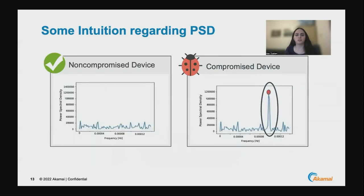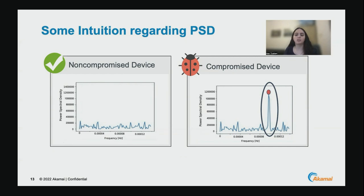Here is some intuition about PSD. Both graphs here represent the PSD as a function of frequency. Let's say I have the activity of a normal benign device with legitimate behavior. On the left, you can see how the PSD will look like for that user — nothing is trying to contact any C2 server, there is nothing automatic and periodic in this activity. On the right side, you can see how the power spectral density looks after we added synthetic periodic activity to the device. You can see a peak that wasn't there on the original graph. Basically, the higher PSD at a specific frequency, the more we can suspect periodic behavior to a C2, which can tell us that the device is being compromised.